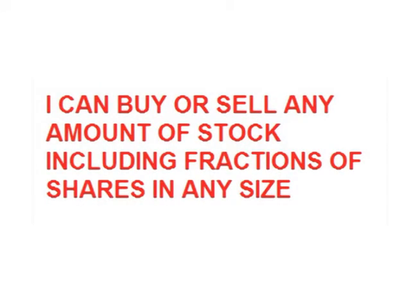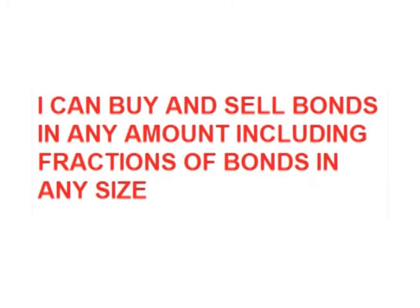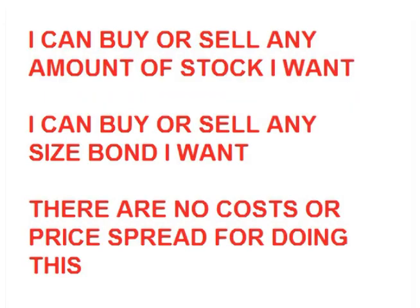Let's look at an example similar to the one Black and Scholes used to prove this theory. Theoretically, suppose I could find a broker that lets me buy or sell not just whole shares of stock, but fractions of shares as well, in any size fraction — one-tenth, one-twenty-fifth, one-ninetieth, any size. This broker also lets me do the same thing with bonds — buy or sell bonds, even fractions of whole bonds in any amount. Furthermore, this broker does not charge commissions and there is no price spread.